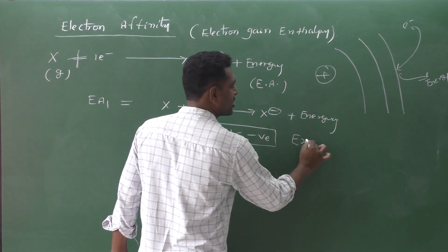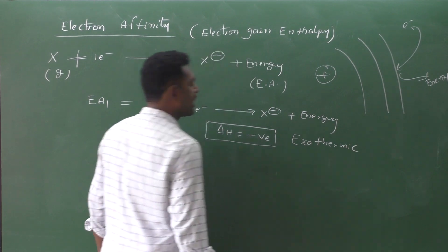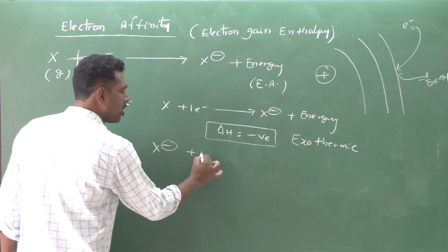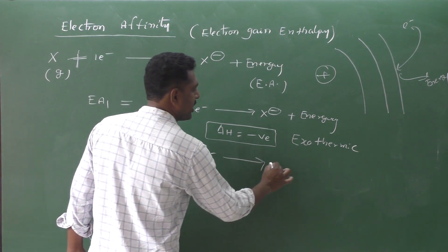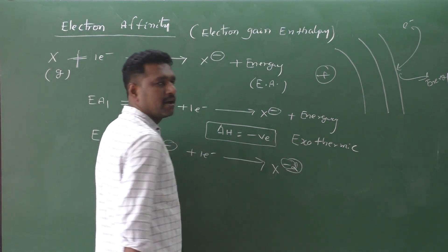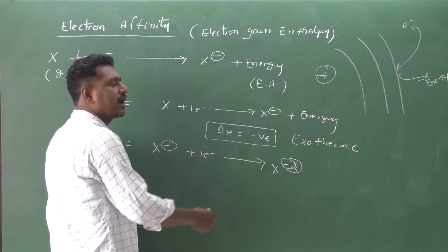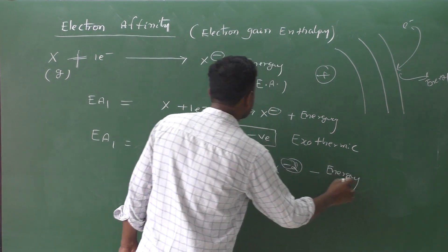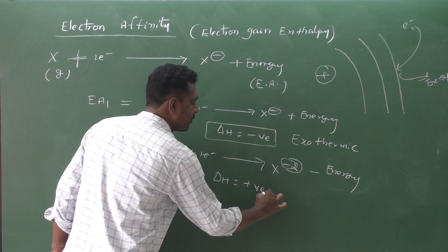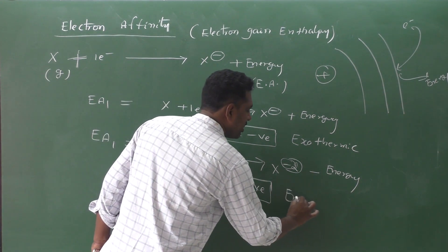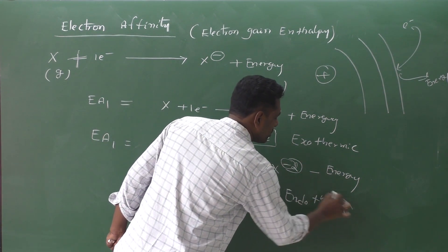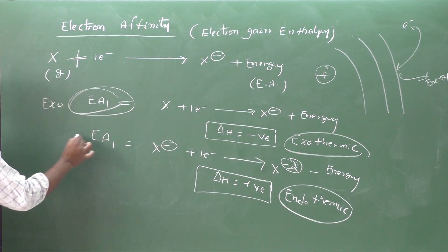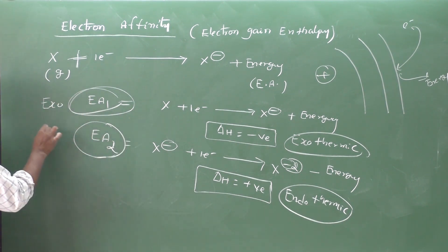Delta H negative means this is an exothermic reaction. For EA2, when we take a uninegative ion X minus and add one more electron to form X minus two, we need to supply energy. Delta H is positive, meaning EA2 is an endothermic reaction. So EA1 is exothermic and EA2 is endothermic.